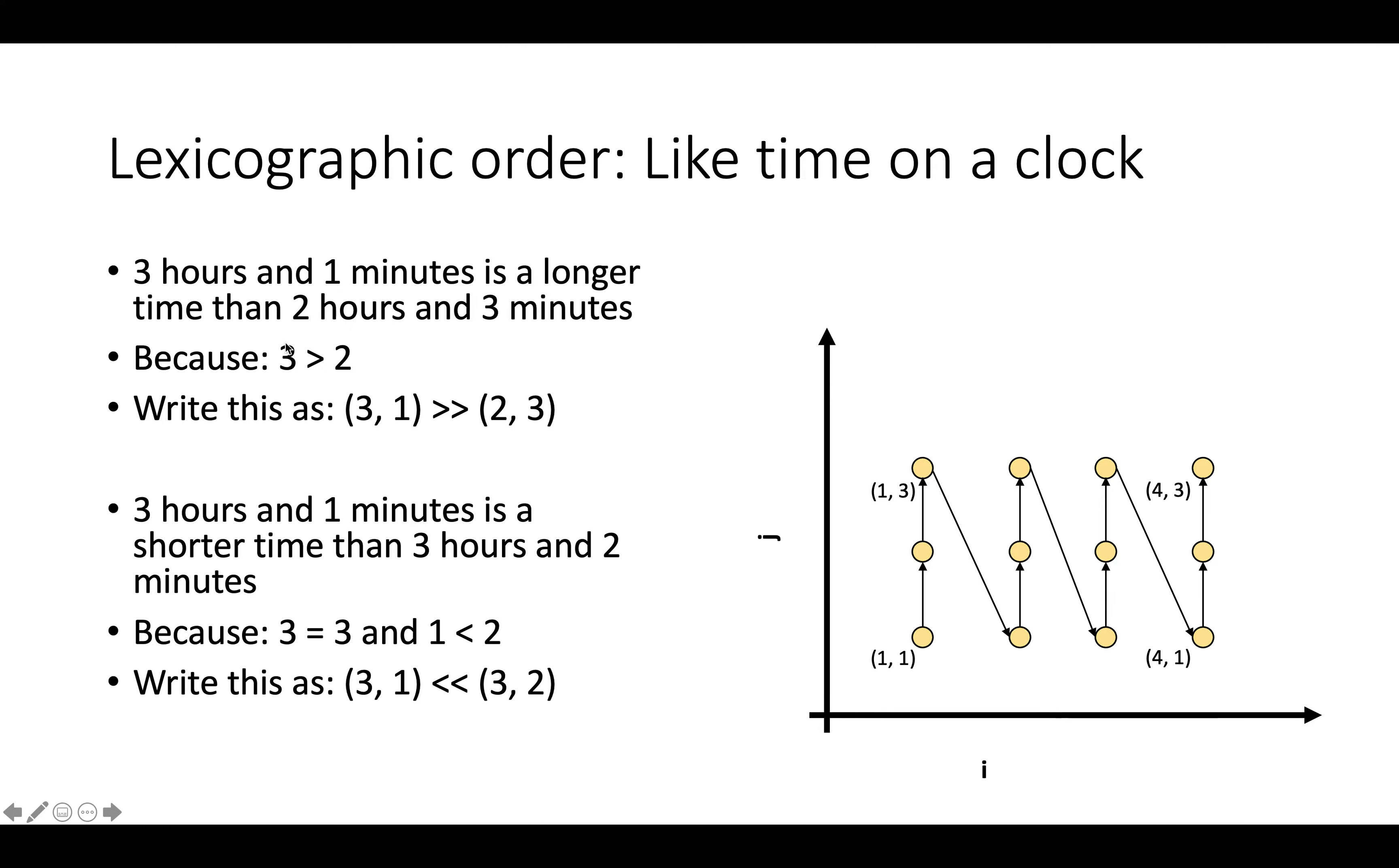And so we don't even have to look at the minutes, we know that 3 is greater than 2, and we're done. We know that this point comes after this point in time. And we write this with this little double greater than sign. We'll say (3,1) is double greater than (2,3), which means lexicographically greater than.